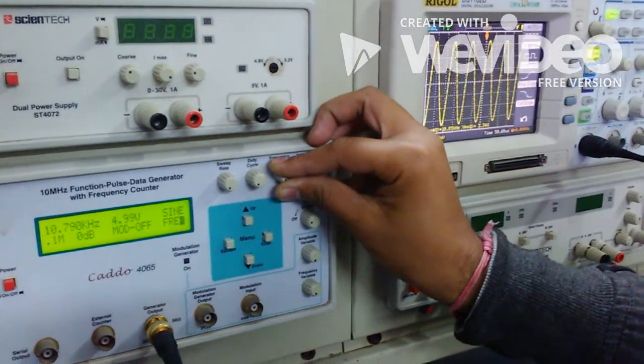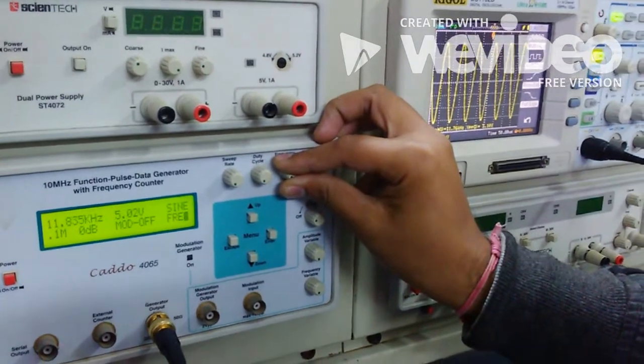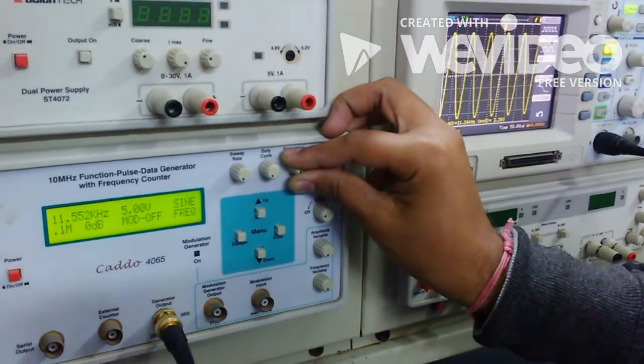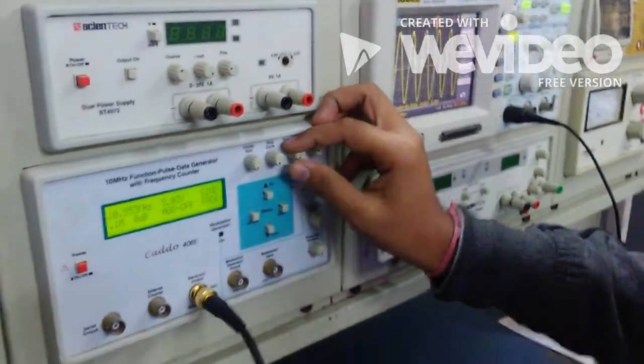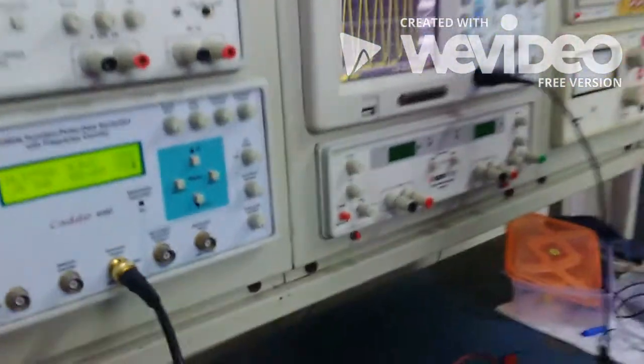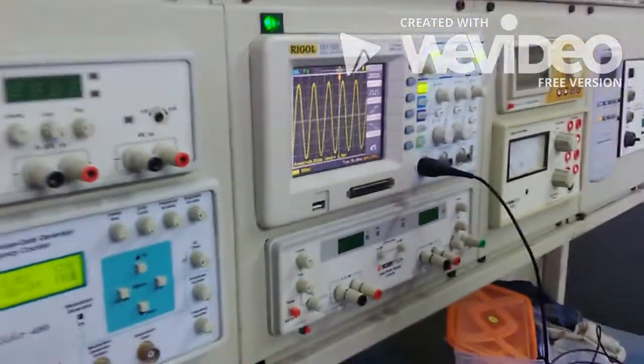Now if I further increase the frequency, then the magnitude of the response becomes lower. So at approximately 11 kilohertz frequency, you can see the response of the circuit is highest. This is our resonant frequency.